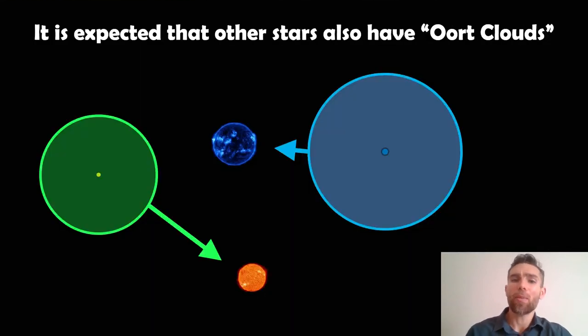So it's also expected that other stars have Oort clouds as well, or their own versions of Oort clouds where they've got these comet-like objects around the outside of them. So we expect other stars to have these spherical clouds of comets around them.